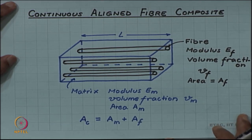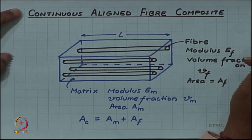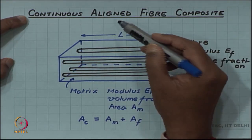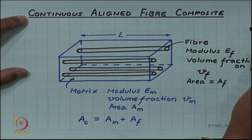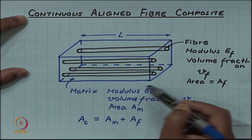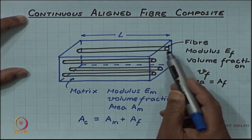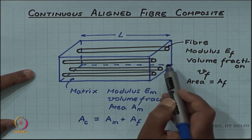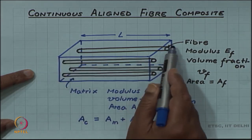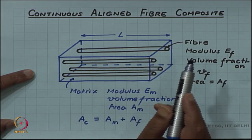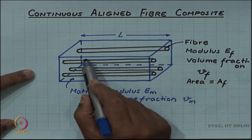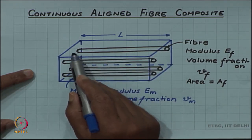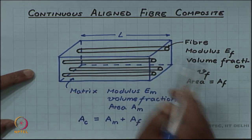For the isostrain modulus, a good model is of a continuous aligned fiber composite. In this sketch I have shown a continuously aligned glass fiber composite, where the polymer is shown as a block of length L and the fibers are also of length L, running from the left end of the composite to the right end.